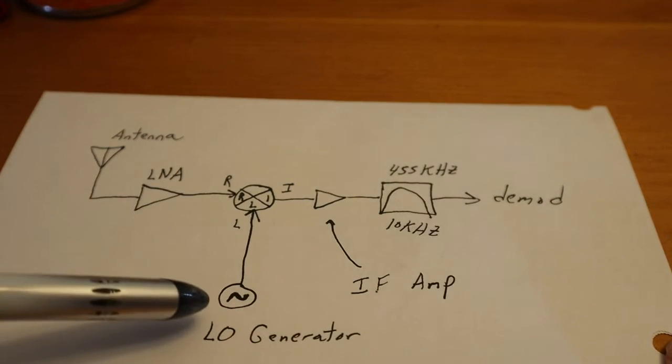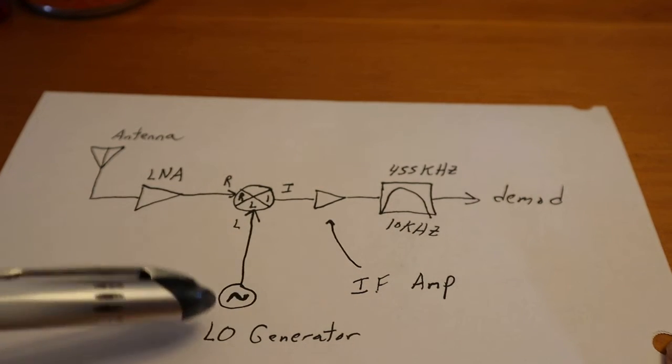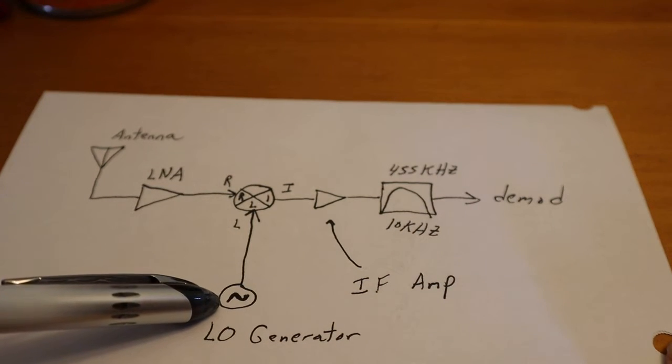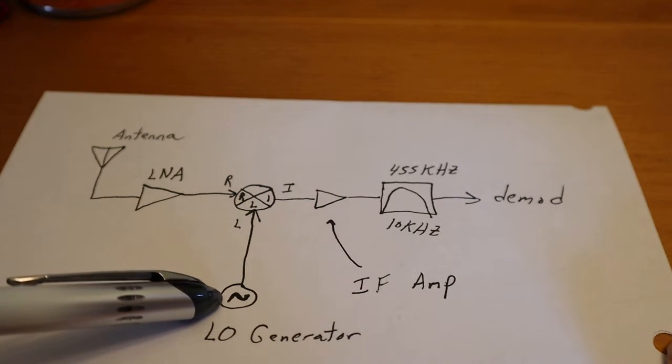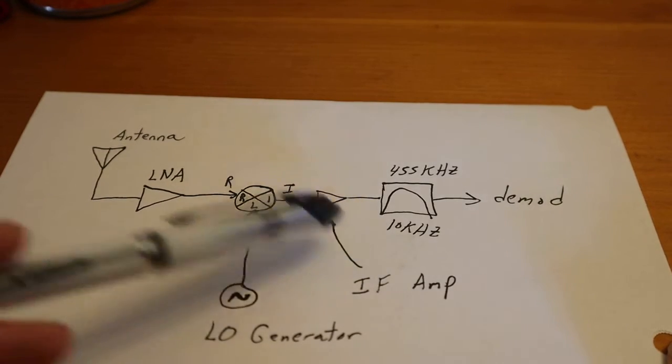So the idea is that as you change stations, what you're changing is not the filter anymore, but you're changing the frequency of that local oscillator, which is much easier to do than changing the bandpass of the filter and have it be stable.